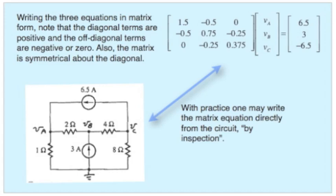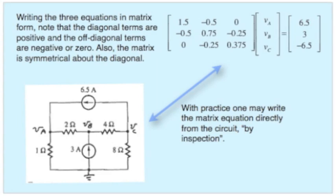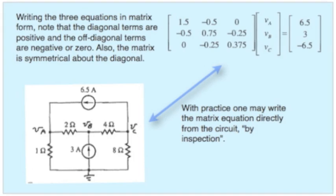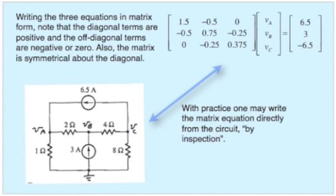Now that we've written our three independent equations for node voltages, note that we can also write them in matrix form. This facilitates solving by means of MATLAB and such tools. And I'd also like to just point out some things about the matrix itself that are characteristic. Look at the diagonal elements, the 1.5, the 0.75, and the 0.375. Note that they are all positive.